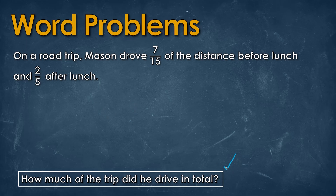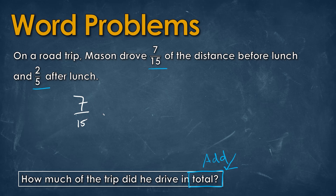Reading the next word problem, it asks how much of the trip did he drive in total. The word 'total' tells us it's going to be addition. Mason drove 7 over 15 of the distance before lunch and 2 over 5 after lunch. So we set up 7 over 15 plus 2 over 5. This is a special case where we only need to multiply the second fraction by 3 on top and bottom to get the same denominator of 15 that we already see in the first fraction.